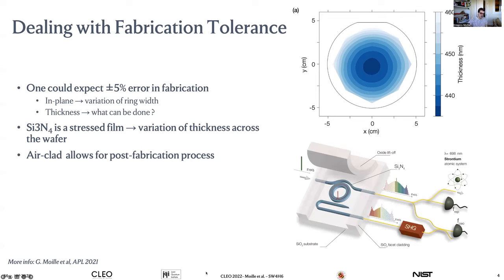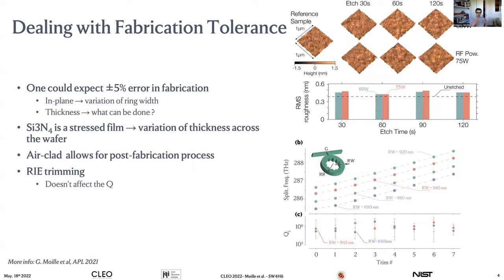We showed in a paper published last year that if you lift the top cladding and reveal the ring resonator — effectively creating an air-clad while keeping facet oxide cladding for low insertion losses — you can perform post-fabrication processing to trim the thickness. Array trimming after fabrication and testing showed very low surface roughness introduced by CF₄ etching that does not affect the Q-factor, enabling effective frequency trimming.